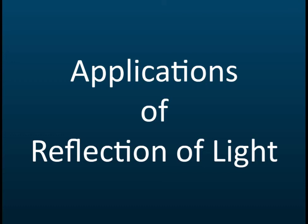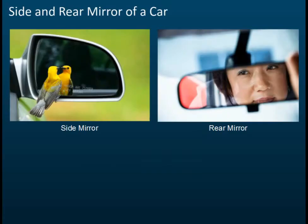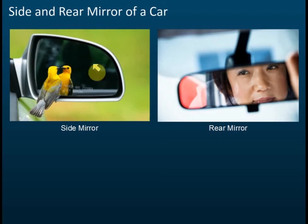Let's look at applications of reflections of light — just a few things you need to know. You should have learned this in Form 4, Chapter 5, so this is just a revision. For safety in cars, we use convex mirrors as side mirrors or rear mirrors of a car.